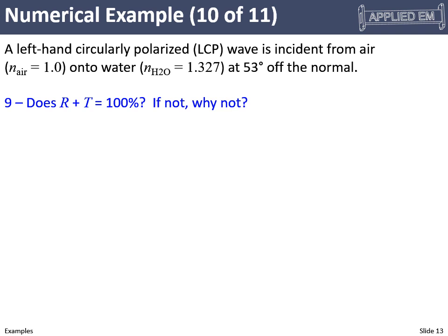Now we check: power must be conserved. Adding our overall reflectance and transmittance together, we should get 1.0 for a lossless medium. Plugging in our numbers, we get exactly 1.0 — we are observing conservation of power. This doesn't guarantee the answers are correct, but if R + T did not equal 1, that would be a 100% guarantee that something is wrong.